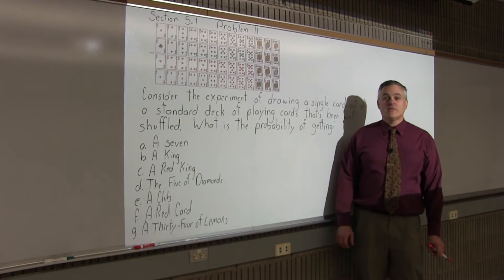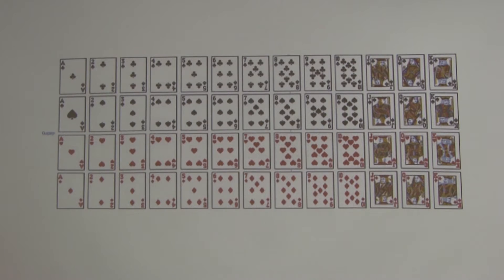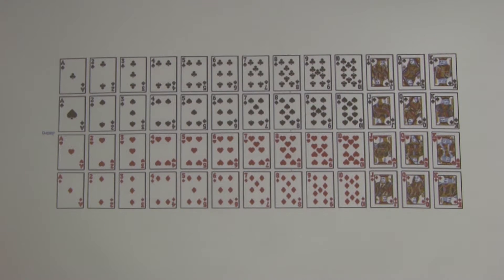This is Section 5.1, Problem number 11. It says, consider the experiment of drawing a single card from a standard deck of playing cards that's been well shuffled. What is the probability of getting the following? I assume most people are probably familiar with a standard deck of playing cards, but just in case you're not, there is one pictured for the problem.